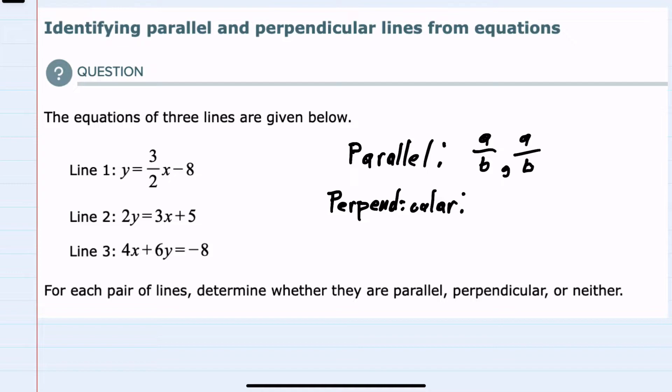For perpendicular lines, if one of the slopes is A over B, the other slope will be the negative reciprocal. So the opposite sign, the first is positive, the second must be negative, and the reciprocal B over A instead of A over B. These slopes will show that two lines are perpendicular. And then anything else will just be neither parallel nor perpendicular.